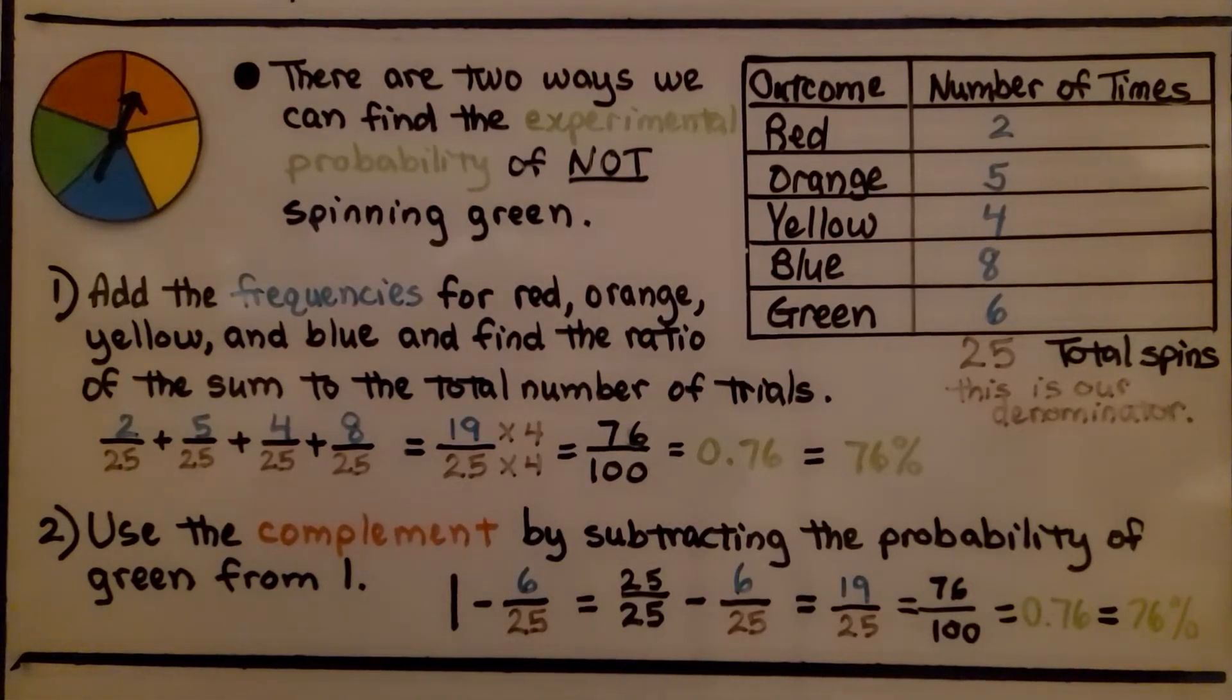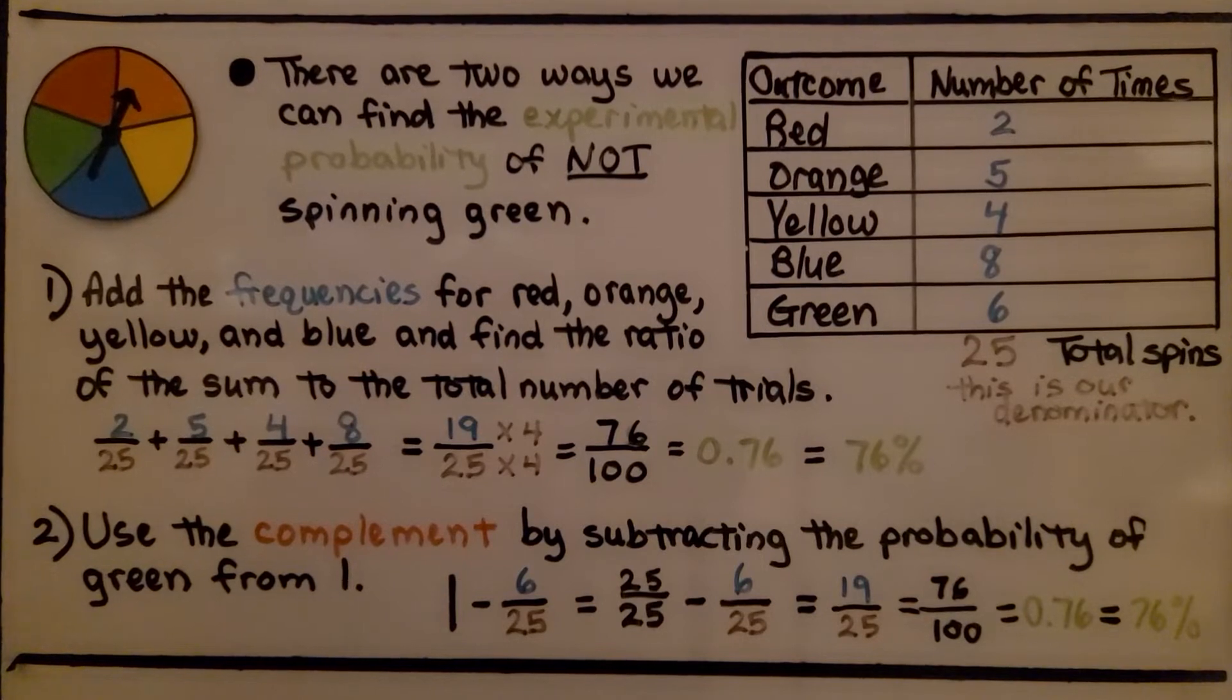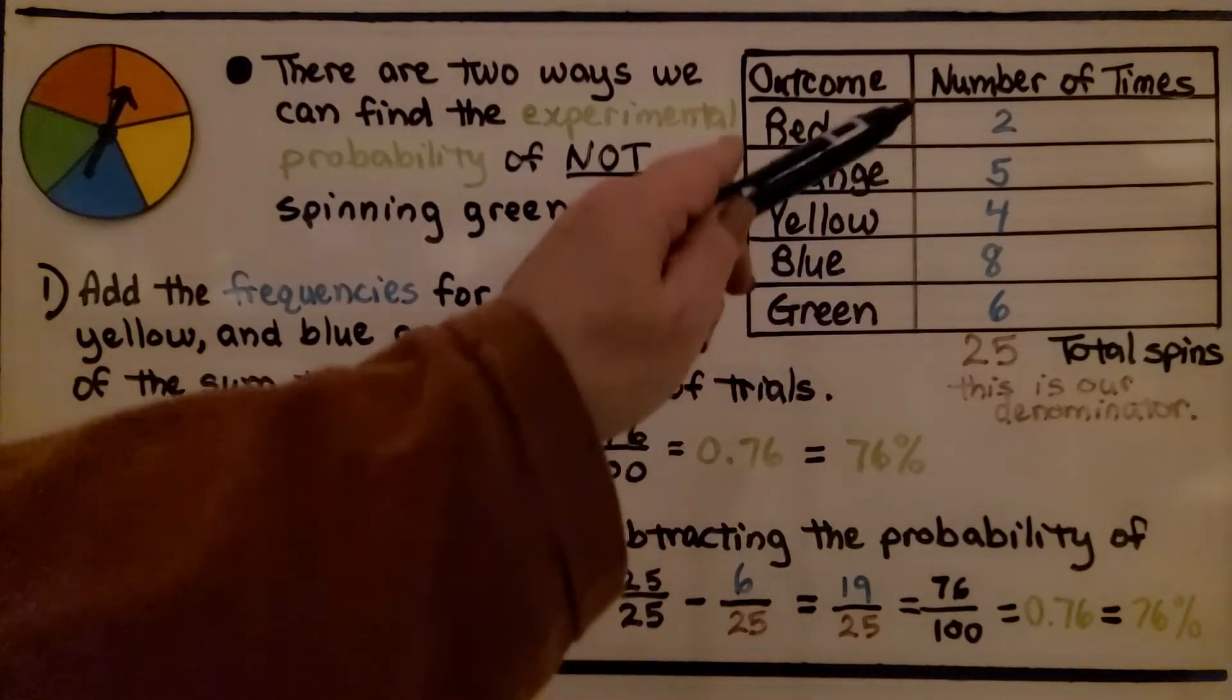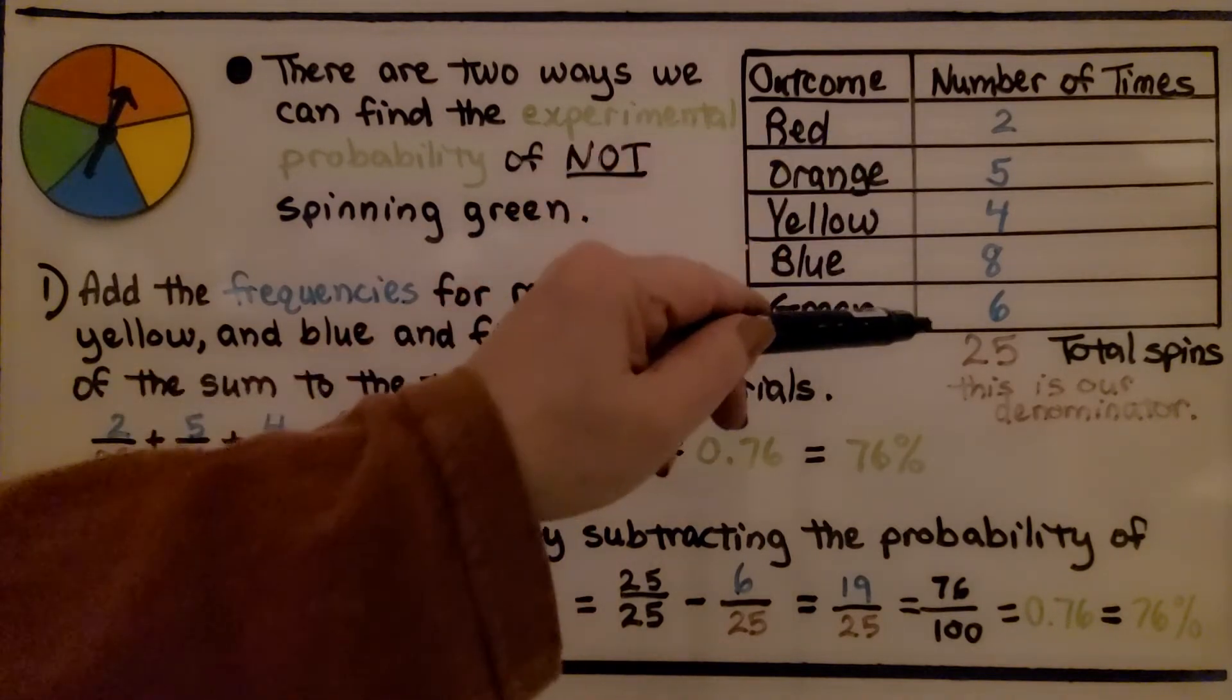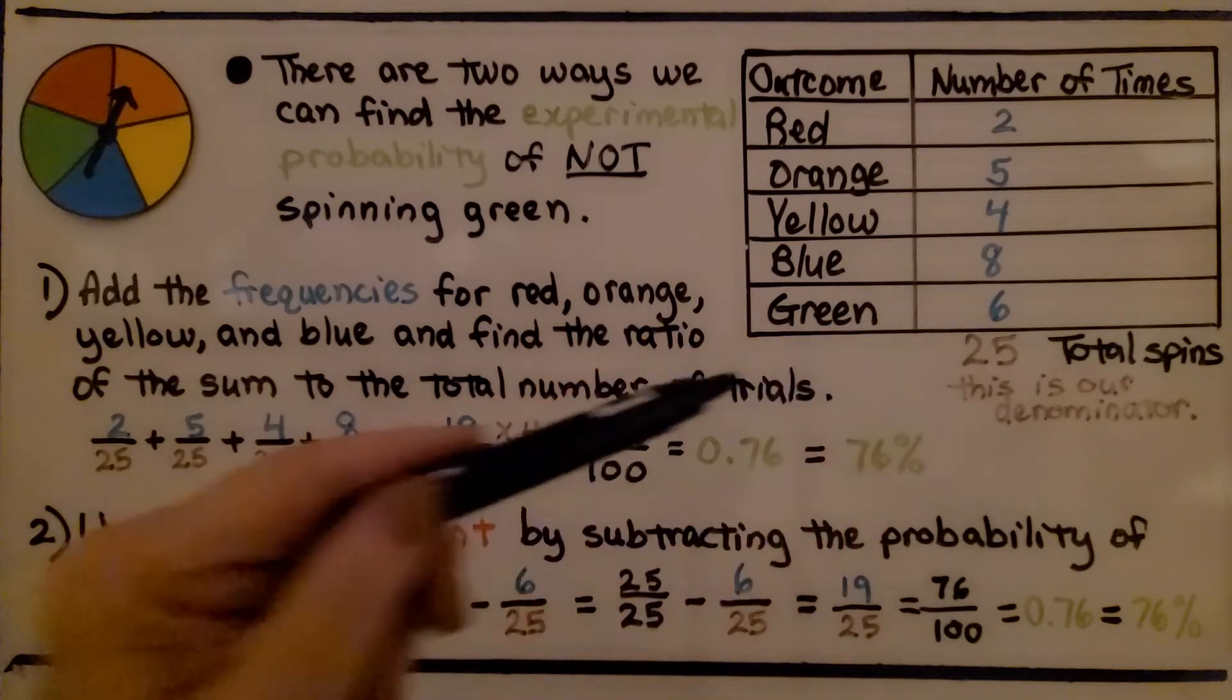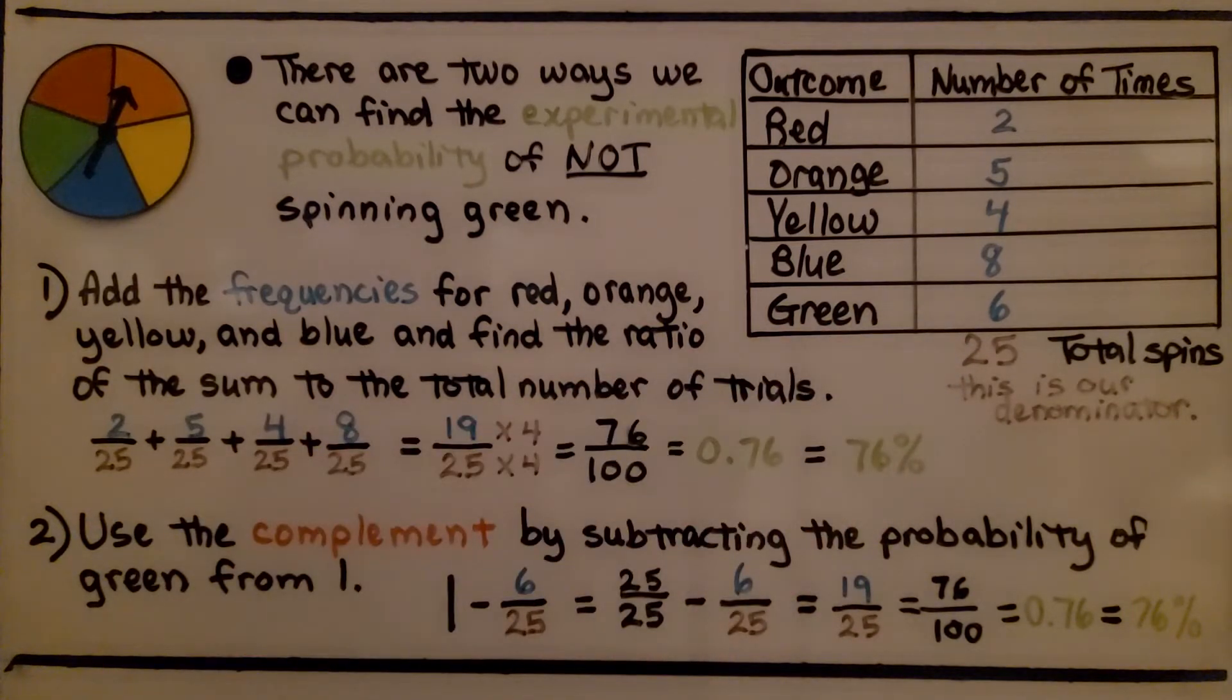Now, there are two ways we can find the experimental probability of not spinning green. So these were our outcomes in the previous problem, and green was six times out of the twenty-five. Well, what's the probability of not spinning green?